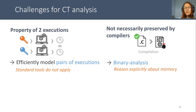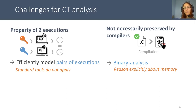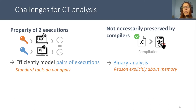There are two main challenges to build constant time verification tools. First, constant time is a property relating to traces, so standard verification tools for safety do not directly apply. And second, it is not necessarily preserved by compilers, and so we have to do our analysis at binary level, which is harder because we have to explicitly reason about the memory.